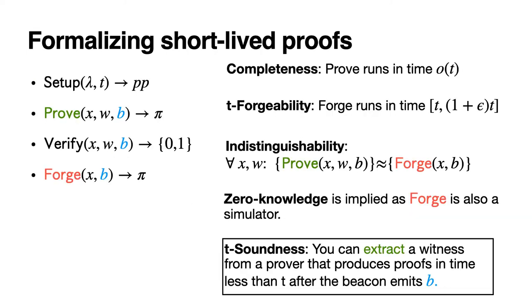When formalizing short-lived proofs, we need a new notion of soundness, which we call T-soundness. T-soundness stipulates that you should be able to extract a witness from a prover that produces proofs in time less than T since the beacon was emitted. But after time T has passed, we lose this guarantee about witness extraction. Note that the time here starts when the beacon value is given, not when the input statement or message is designed.